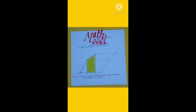So mod of c vector cross (a vector plus b vector) is equal to mod of c vector cross a vector plus mod of c vector cross b vector. The direction of each of these vectors — c vector cross (a vector plus b vector), c vector cross a vector, and c vector cross b vector — is perpendicular to the same plane. So c vector cross (a vector plus b vector) is equal to c vector cross a vector plus c vector cross b vector.